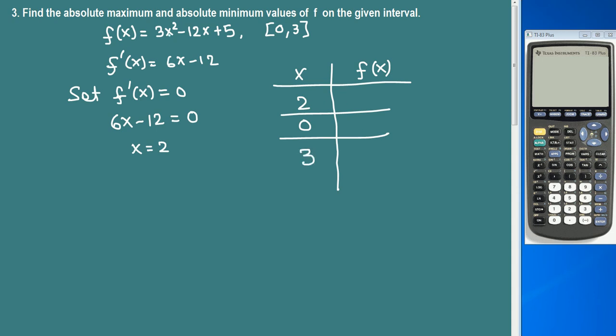Now we plug in x equals 2, 0, 3 in this function and whatever is the largest, that's the absolute max, and the lowest is the absolute minimum. Let's plug in x equals 2 in this function using your calculator. I'm going to graph this function and evaluate the function value at three different x values. So this is the function 3x² minus 12x plus 5. Now I want to calculate the value. Second, trace, calc, value, enter. X equals 2, we get negative 7. Next plug in 0, we get 5. Plug in 3, we get negative 4.